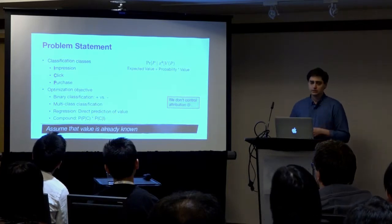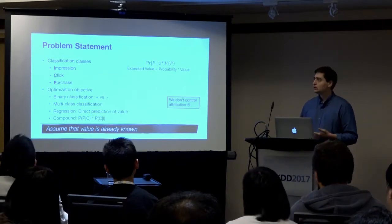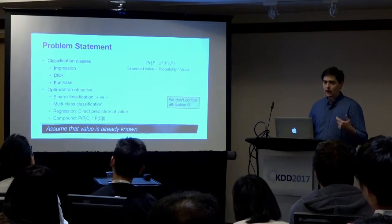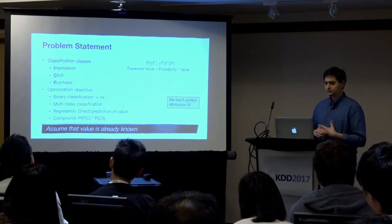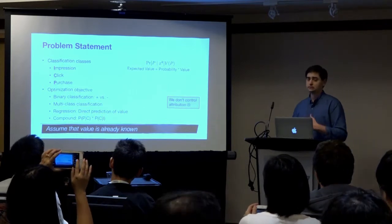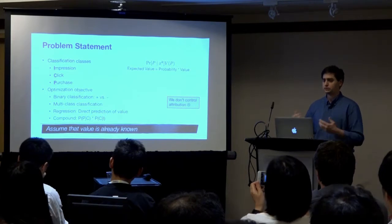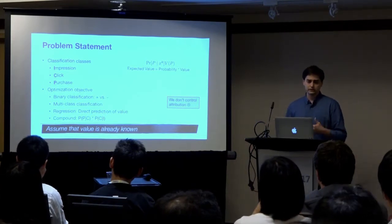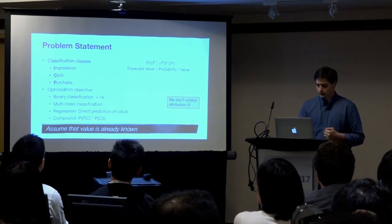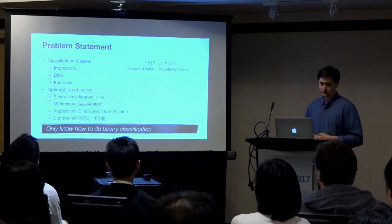We're going to use classification — one good way of doing it, not necessarily the only way. What are the classes? There are three: impression, click, and purchase. We could use binary classification, multi-class classification, which is fancier, or regression to figure out the actual value. We're going to pick binary classification because we only know how to do binary classification really well.